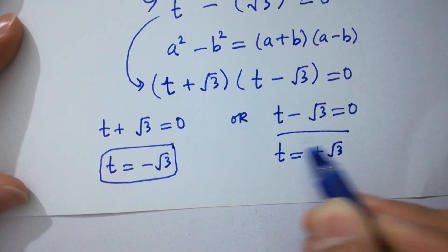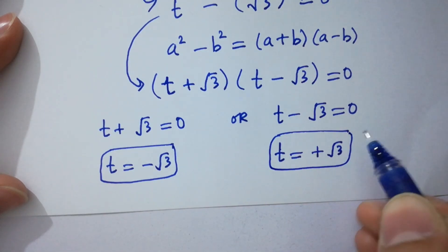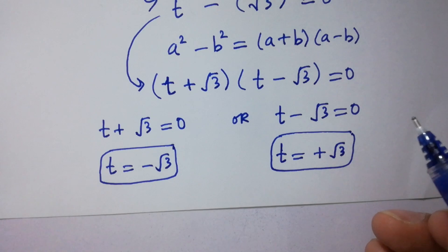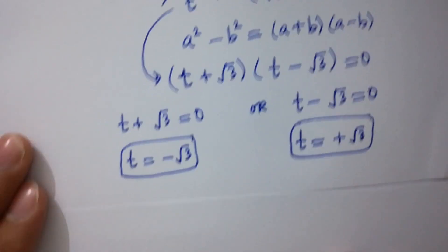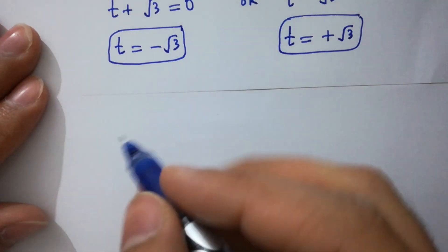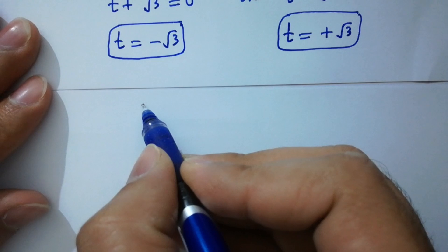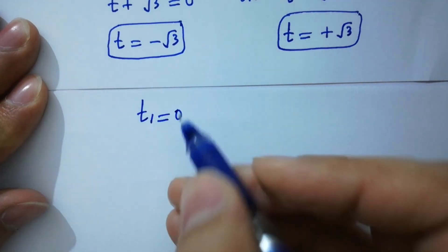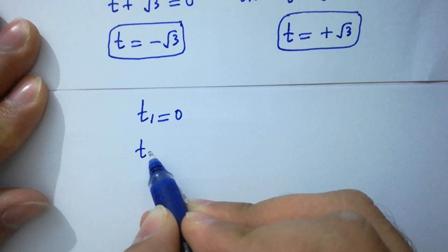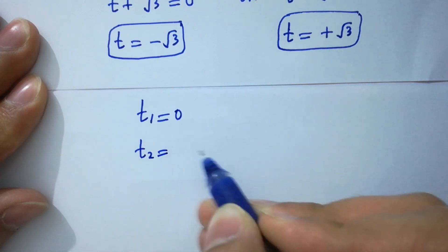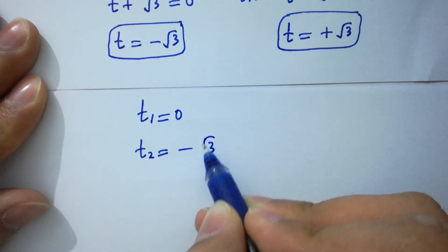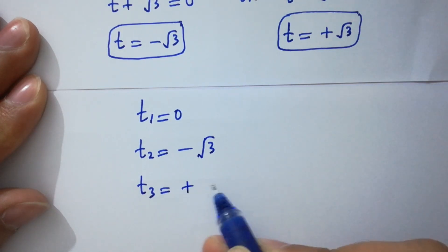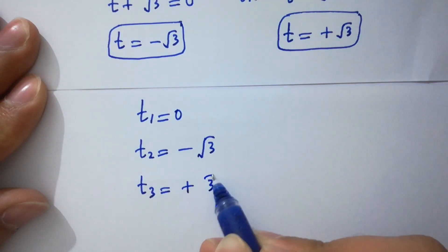So we have three solutions: t1 equal to 0, t2 equal to minus square root of 3, and t3 equal to plus square root of 3.